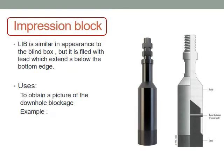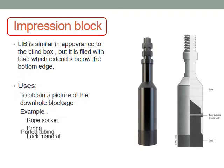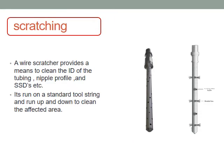Impression block is used to get an impression from a lost tool or to obtain a picture of a downhole blockage — such as a junk circuit, a prong, a lock mandrel, parted tube, and so on.